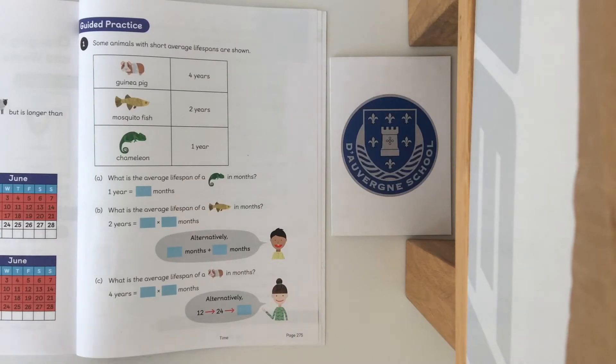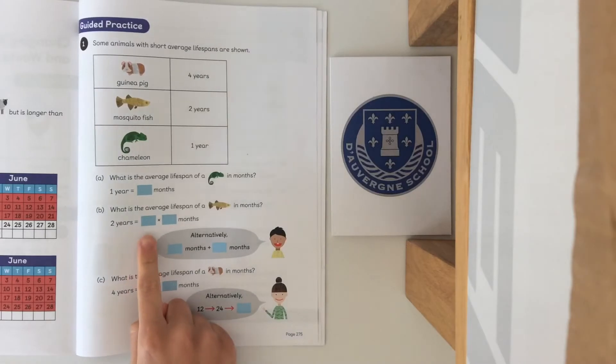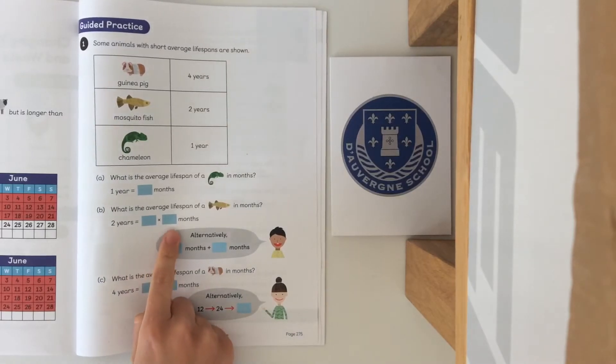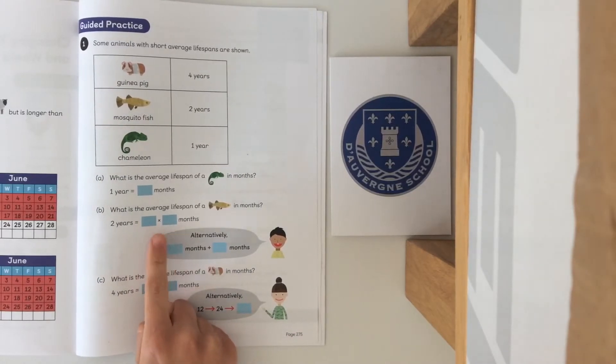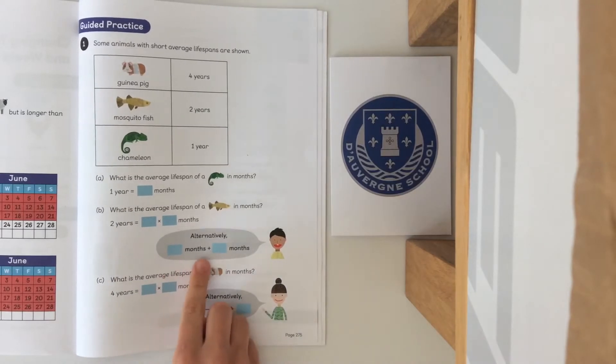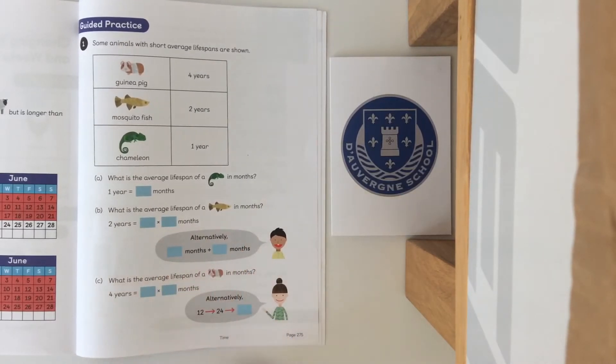For question A you should have put one year equals 12 months, so a chameleon lives for 12 months. Question B: two years equals two times 12 months, two groups of 12, or 12 months add another 12 months through repeated addition.